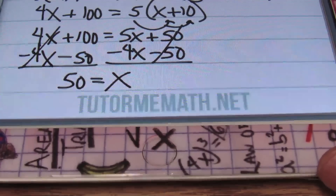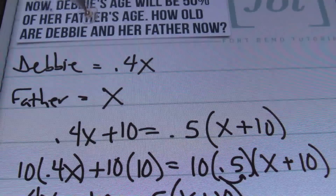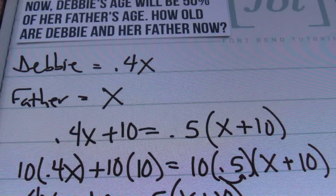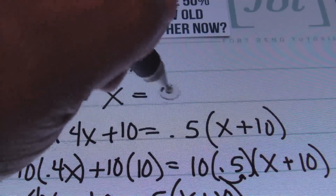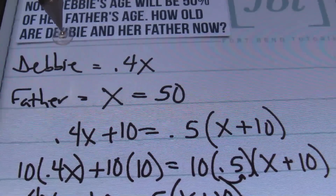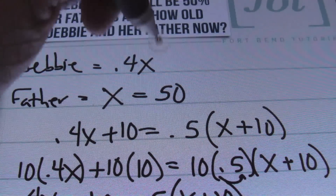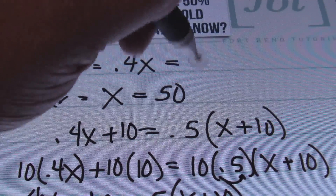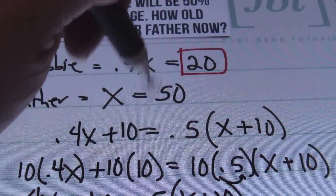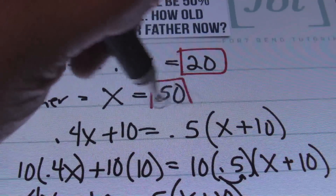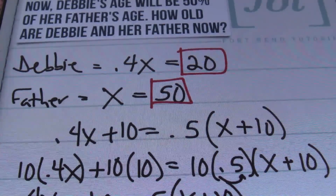Going back to our definition — how old are Debbie and her father now? We know that the father's age is fifty. And we know that Debbie's age is going to be forty percent of that, which is twenty. So our solutions are: Debbie is twenty and her father is fifty. That's problem number four.